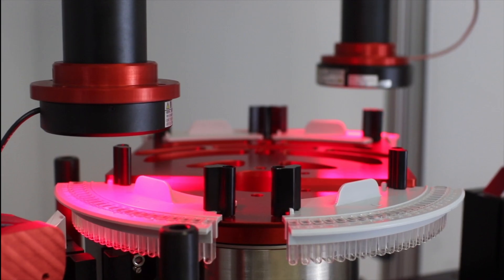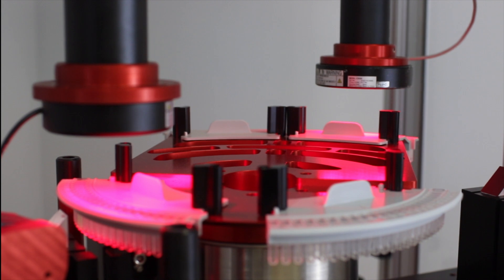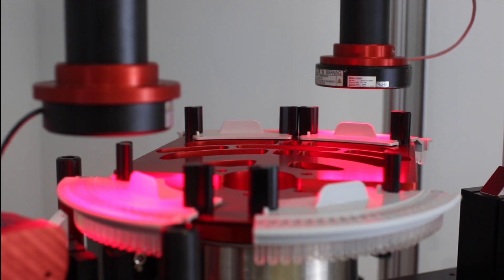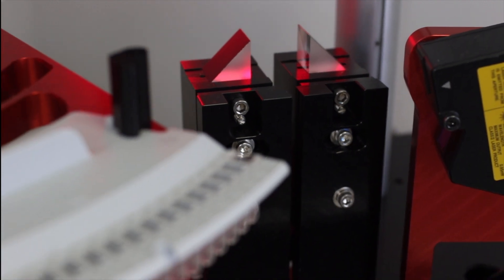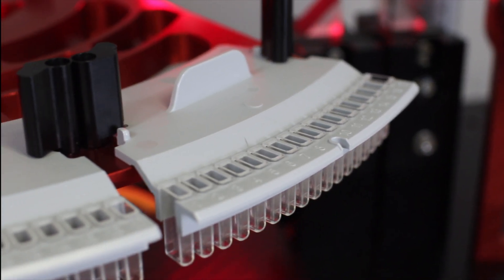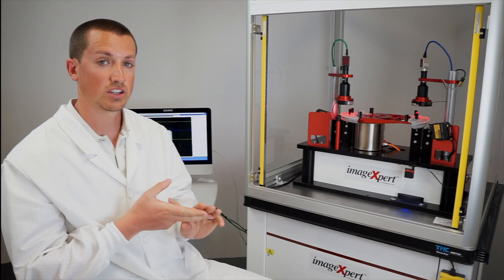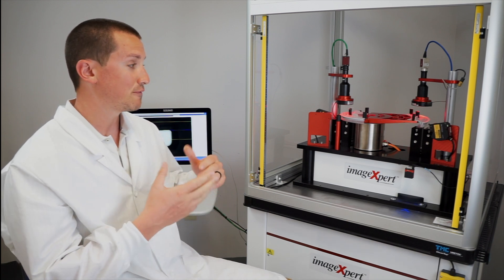The cuvette moves to the second inspection position, where a dual camera and lighting setup inspects the window from both sides of the cuvette. It checks the thickness of the windows, the orientation of the part, in five degrees of freedom.